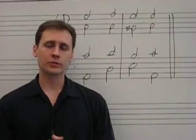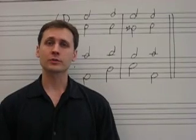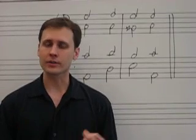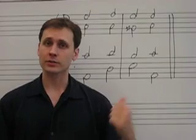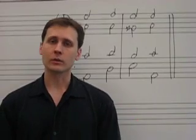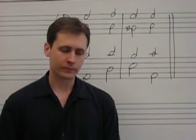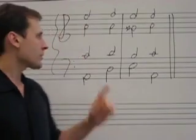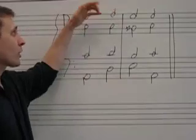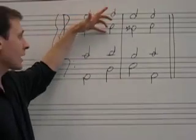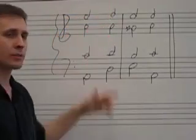When you're using Roman numerals to analyze music in minor keys, use the exact same process that we talked about with major keys. Let's look at this example. We've got four-part harmony: soprano, alto, tenor, and bass.